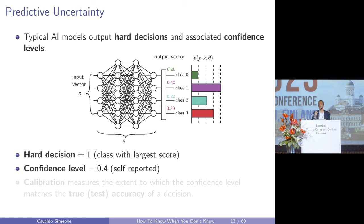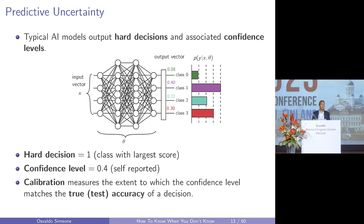A model is well calibrated if, when you look at all decisions that have approximately a confidence level of 0.4, the true accuracy of those decisions on average is 0.4 — that's 40%. So the fraction of decisions that are correct and have this level of confidence is actually 40%. You can trust this number to give you a sense of how accurate a decision is.